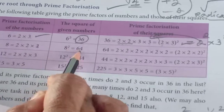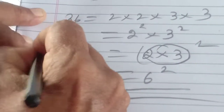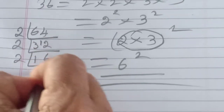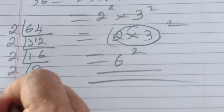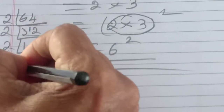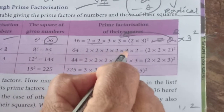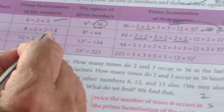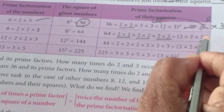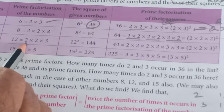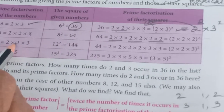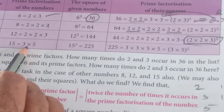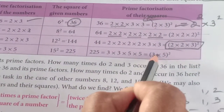Similarly for 8 squared which is 64: prime factorization gives six 2s, that is 2 into 2 into 2 the whole square. For 12, you got 2 into 2 into 3, so 12 squared means 2 into 2 into 3 the whole square. For 15, you got 3 into 5, so 15 squared means 3 into 5 the whole square.